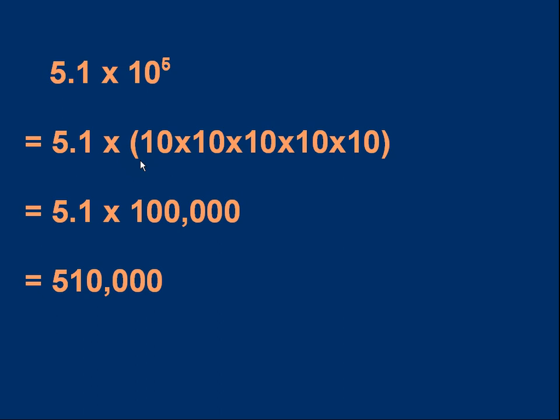So this notation 5.1 × 10⁵ is a way of representing 5.1 × 100,000, or 510,000, and this is called standard form or scientific notation.